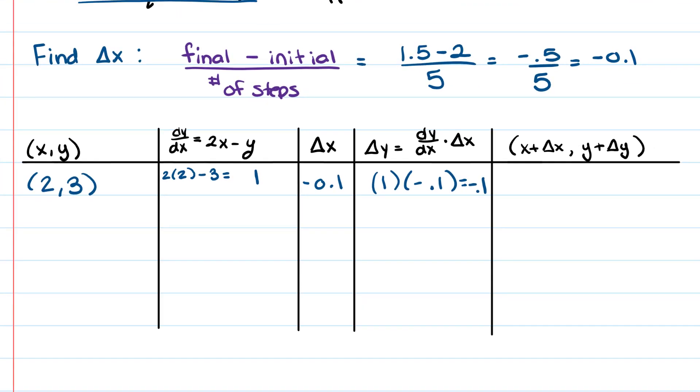Then delta x plus x is going to be 1.9. And y plus delta y is going to be 3 plus negative 0.1, so we get 2.9.